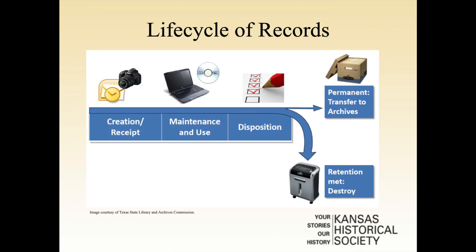You may at some point come across the phrase life cycle of records, which can sound a little confusing or intimidating, but it's really quite simple. Either you create a record or receive it from another individual or another agency. You use it for a certain period of time, for example until a particular project or a grant is over. And then when you no longer need that record or no longer refer to it on a regular basis, it hits its disposition — those records are either kept by your agency permanently on-site or off-site, transferred to us at the state archives, or destroyed.